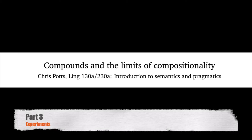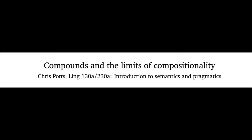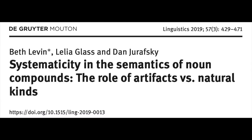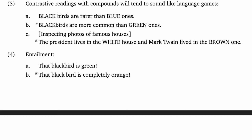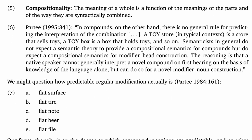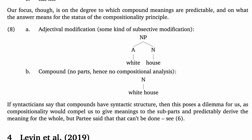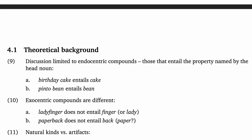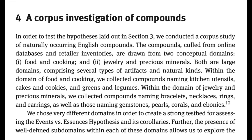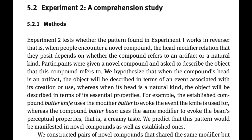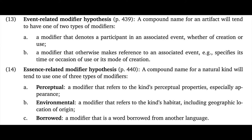Hi, Chris Potts here. This is part three in our screencast series on the paper by Levine, Glass, and Jurafsky titled 'Systematicity and the Semantics of Noun Compounds: the Role of Artifacts vs. Natural Kinds.' Screencasts one and two give an overview of the background, motivations, and core hypotheses for this work, and so they're really prerequisites for this screencast. What this screencast does is review the three main studies from the paper that seek to inform the event-related modifier hypothesis and the essence-related modifier hypothesis.